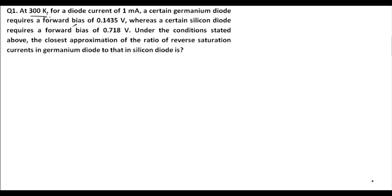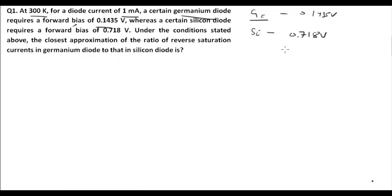Question number one: At 300 Kelvin, for a diode current of 1 milliampere, a certain germanium diode requires a forward bias voltage of 0.1435 V, and for silicon it is 0.7118 V. Under these conditions, find the closest approximation of the ratio of the reverse saturation current Is1 upon Is2, that is for germanium upon silicon.